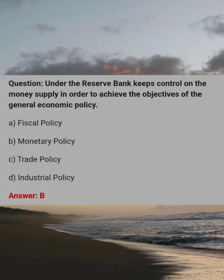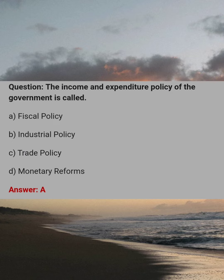The Reserve Bank keeps control on the money supplied in order to achieve the objectives of general economic policy. Answer: B, monetary policy. The income and expenditure policy of the government is called. Answer: A, fiscal policy.